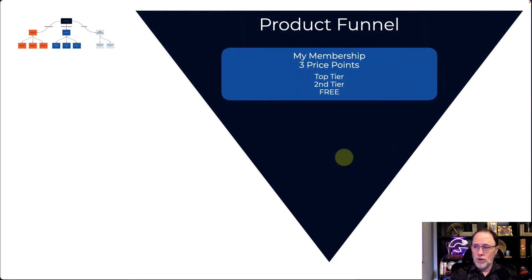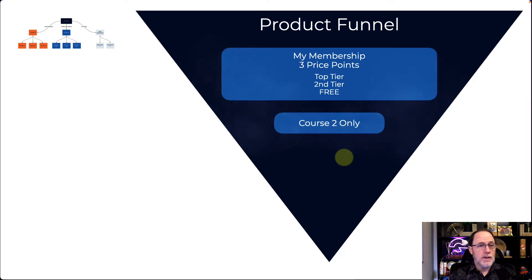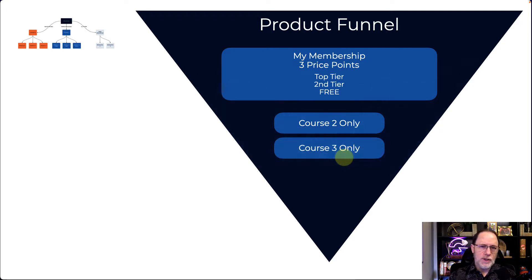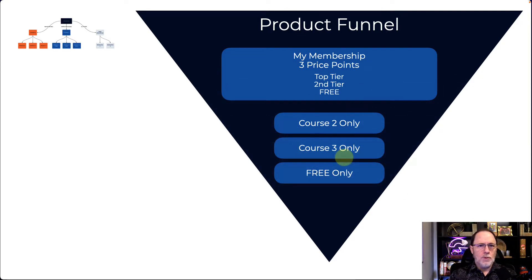The first product is going to be called My Membership, and it's going to have three price points: the top tier, the second tier, and the free price point. So we're going to show how to give access levels based on price point. The second product is going to be Course 2 only, so we can create a checkout just for the course — buy the course itself in one purchase price. Then we're going to have Course 3, and then also the free only. So we're looking at how to build a product and give access based on price point, and then how to build a single product and give access based on the single product.